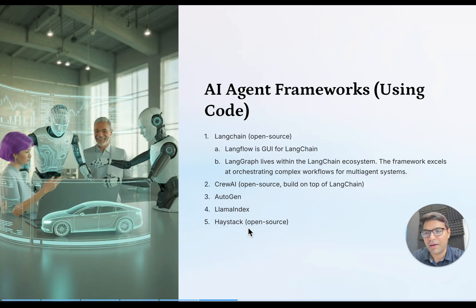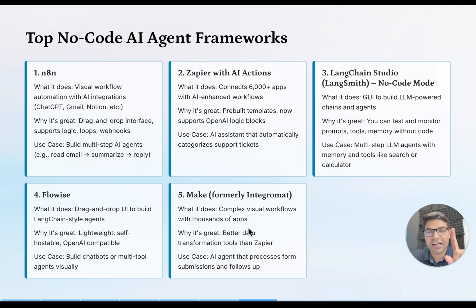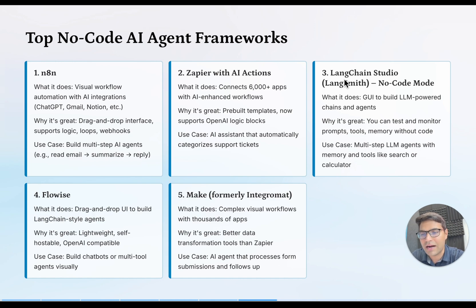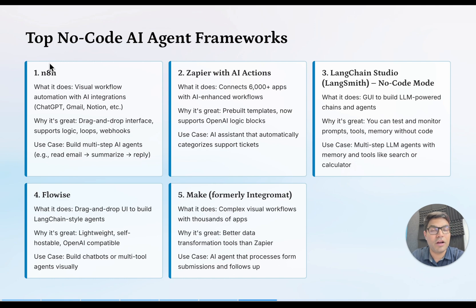If you don't come from a programming background, don't worry. There are many platforms that use a no-code approach — you won't need to write even a single line of code. Platforms like N8N, Zapier, LangSmith from LangChain, Flowwise, and Make are five of the most famous no-code platforms for building AI agents. My personal favorite is N8N — one of the most prominent in the market right now. They've raised millions in funding and are being implemented by many companies. If you come from a non-tech background, I highly recommend this platform.